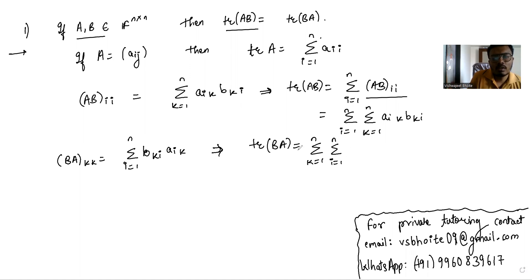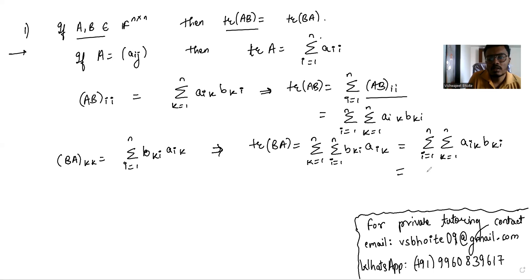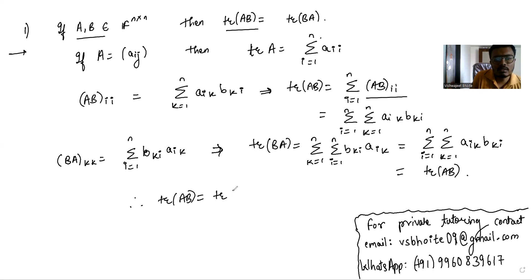This is the same as summation i from one to n, summation k from one to n, of a_{ik} b_{ki}, which is nothing but trace(AB). Therefore, trace(AB) is equal to trace(BA).